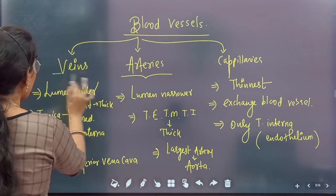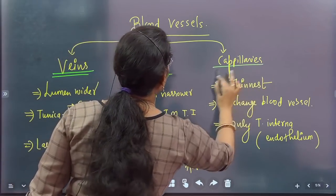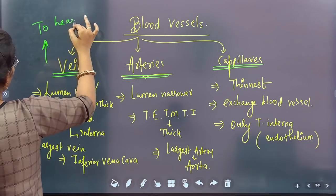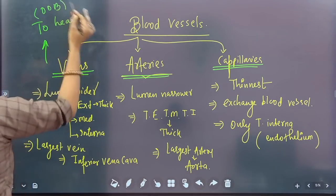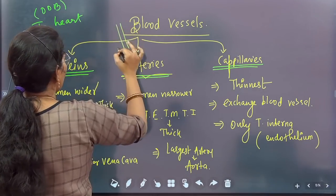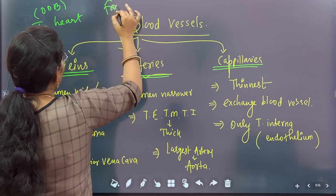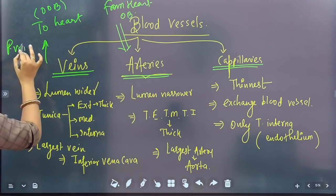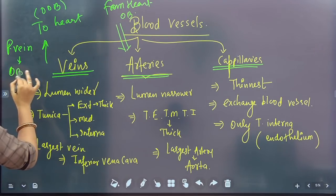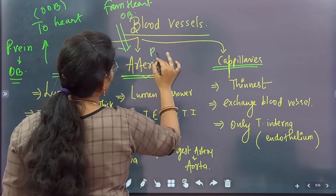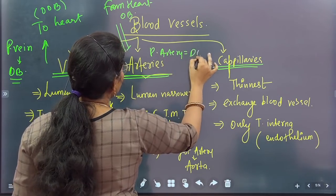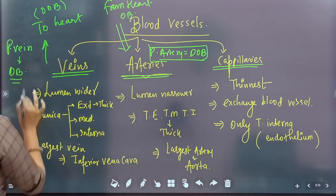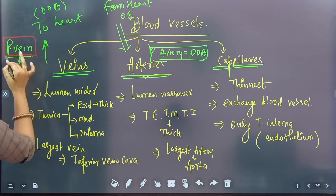Next we look at blood vessels. We have three types of blood vessels: veins, arteries, and capillaries. Veins carry deoxygenated blood to the heart. Arteries carry oxygenated blood from the heart. But there are exceptions: the pulmonary vein carries oxygenated blood, and the pulmonary artery carries deoxygenated blood. So arteries generally carry oxygenated blood, except the pulmonary artery; and veins generally carry deoxygenated blood, except the pulmonary vein.